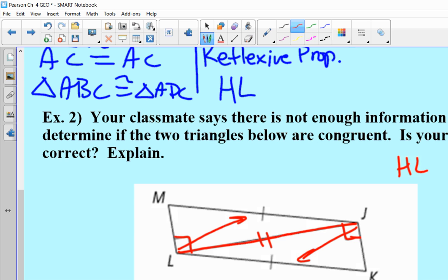He said there's not enough. Usually it's the guys who say there's not enough information, they're usually wrong. So one of the girls in the class says that is HL because I've got hypotenuses, hypotenuses are congruent, and the same corresponding legs congruent. So yes, it is true by HL. So there was enough information for me to determine that it was. All right.